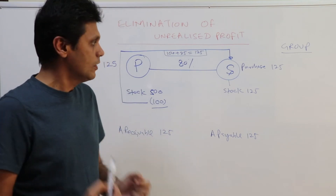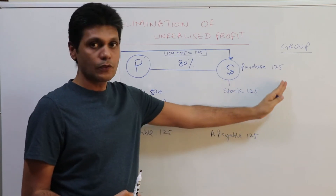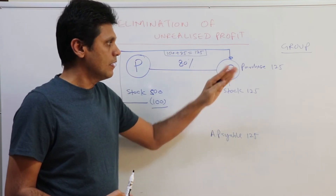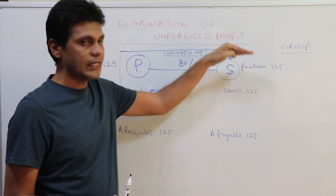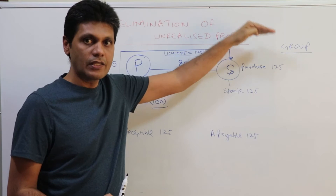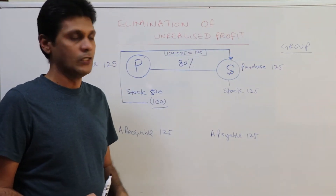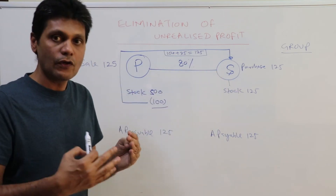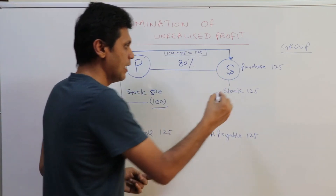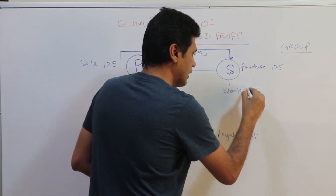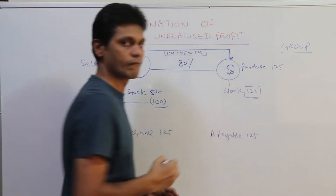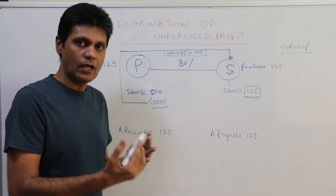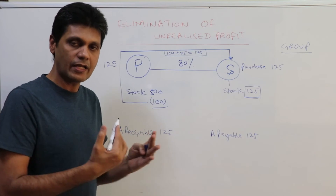So you can only record the profit when sales are made to outside customers — then only is the profit realized. As far as the group is concerned, this profit of $25 is not realized; it is included in the stock value.